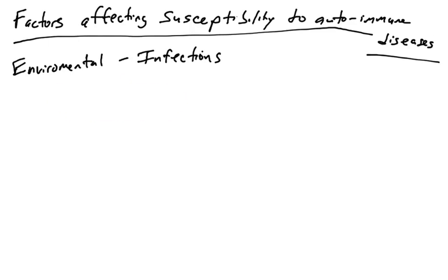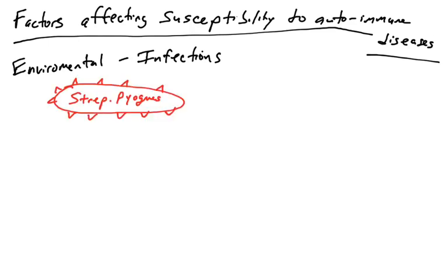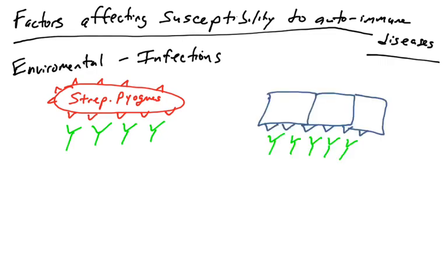How can a pathogen trigger an autoimmune response? One example is a certain strain of streptococcus bacteria, which infects the throat and causes strep throat. If that pathogen isn't cleared quickly enough — maybe not given antibiotics — the immune system has to keep fighting it. The immune system may recognize the pathogen using antibodies, generating an antibody response against a molecule on the surface of the streptococcal bacteria. Some strains have a surface molecule that elicits an immune response, and that molecule shares epitopes with host molecules.